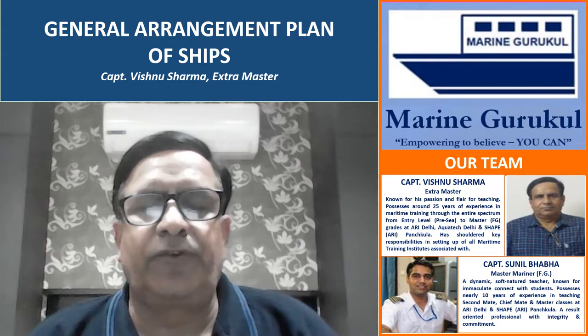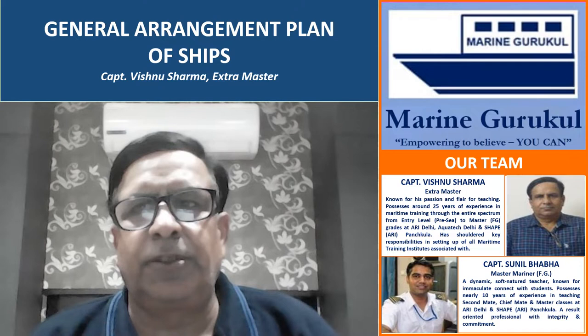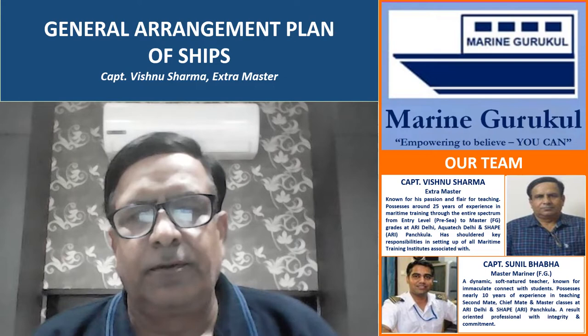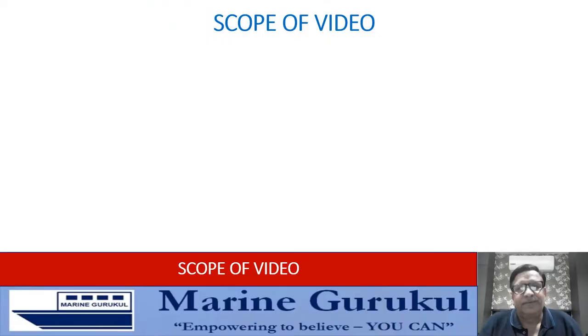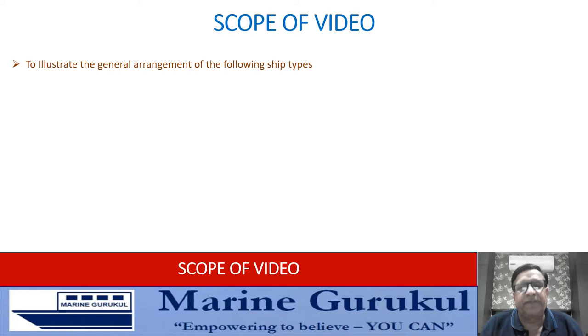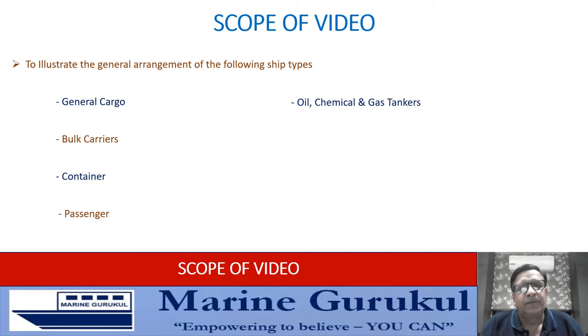Welcome to Marine Gurukul video series. In this video we shall try and understand one of the most important plans on the ship — the ship's general arrangement plan, or the ship's GA plan. This plan is so important because it familiarizes a person with the layout of the spaces on board. The scope of this video includes illustration of the GA plan of different ship types: general cargo ships, bulk carriers, container ships, passenger ships, tankers including oil, chemical and gas tankers, combination carriers, and roll-on roll-off vessels.